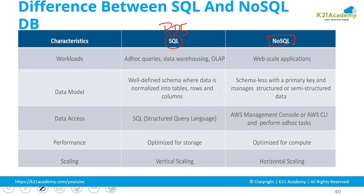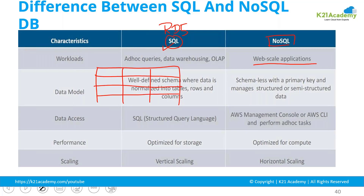With NoSQL services, web-scale applications are only supported. The benefit with SQL is that when you are designing a table, you need to define the exact structure — what name, phone number, address — everything has to be defined. Name has to be character, age has to be number.